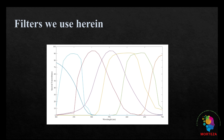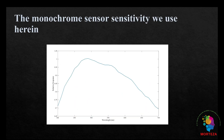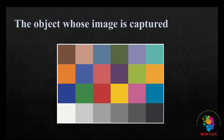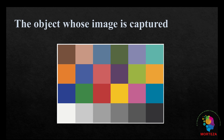To do that we presume that a filter array containing filters of the following spectral transmittance is put in front of a monochrome sensor. The spectral sensitivity of the monochrome sensor we are using is shown here. The object whose image we are going to capture is a Macbeth color checker. So in our situation we assume that a Macbeth color checker is set in front of a multi-spectral camera, which consists of a filter array in front of a monochrome sensor.